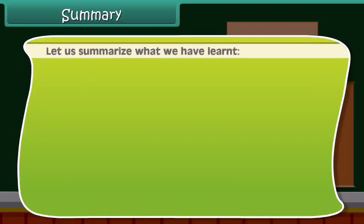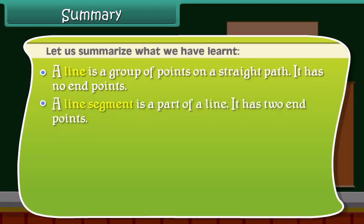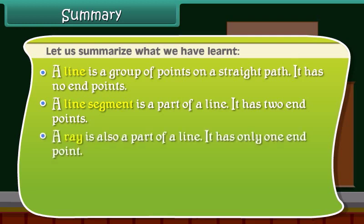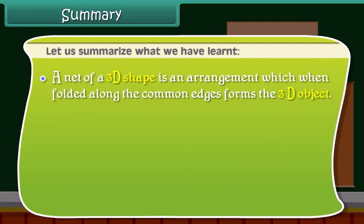Let us summarize what we have learned. A line is a group of points on a straight path; it has no end points. A line segment is a part of a line with two end points. A ray is also a part of a line with only one end point. A tessellation is a 2D figure created through the repeated use of a geometric shape without any gaps or overlaps. A net of a 3D shape is an arrangement which, when folded along the common edges, forms the 3D object.